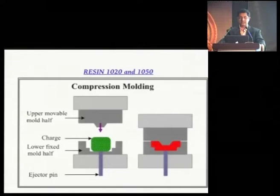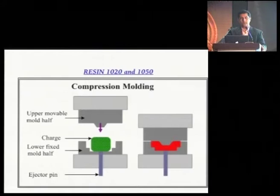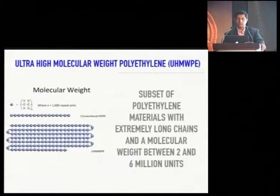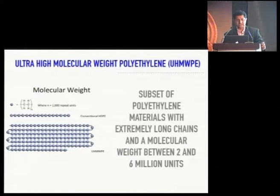This was the first generation of polyethylene and it was known to have wear, backside wear — the cams would break out, the poly would also break out. Hence people tried to increase the connectivity, and so came the ultra-high molecular weight polyethylene, which is a subset of polyethylene with extremely long chains with a molecular weight between two and six million units. This was introduced in 1998, and slowly people realized they wanted something better, so they created the highly cross-linked polyethylene.